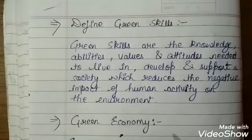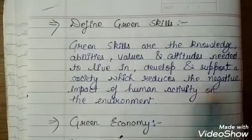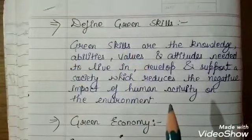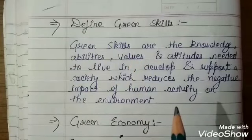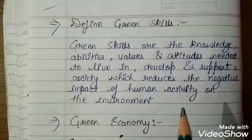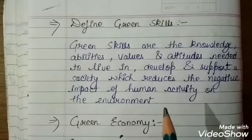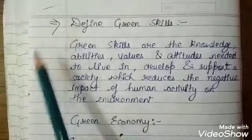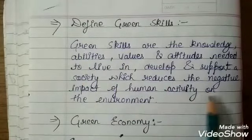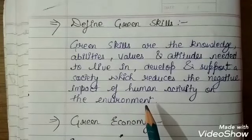Green skills are the knowledge, abilities, values, and attitudes needed to live, develop, and support a society which reduces the negative impact of human activity on the environment. Green skills kya hai — green skills are the knowledge, abilities, values, and attitudes jis ke through hum apni society ko develop aur support kar saktay hain. In ke through hum environment par negative impact ko reduce kar saktay hain.